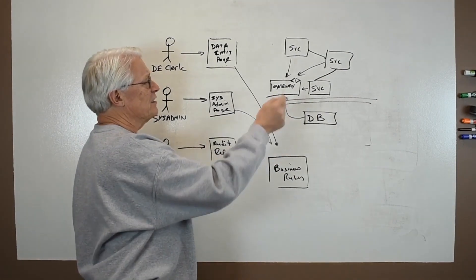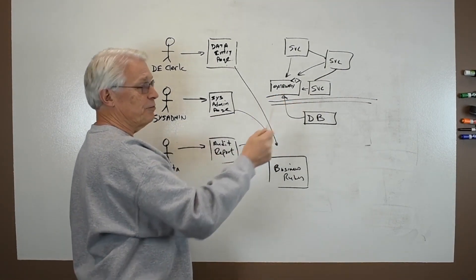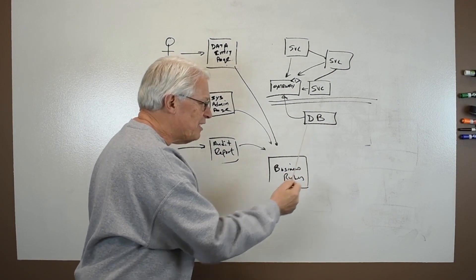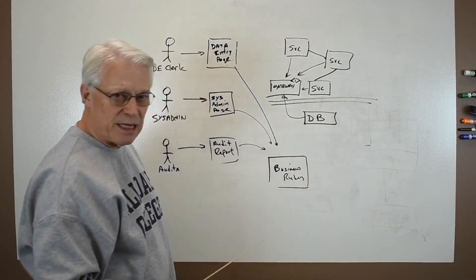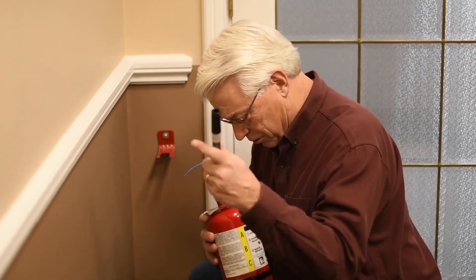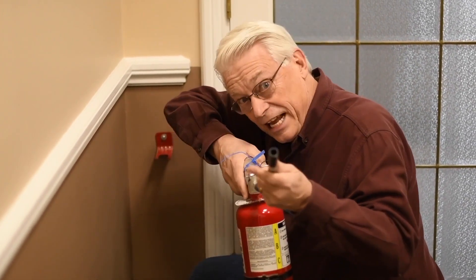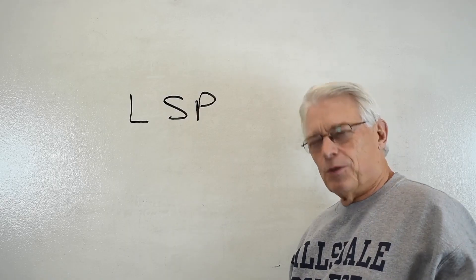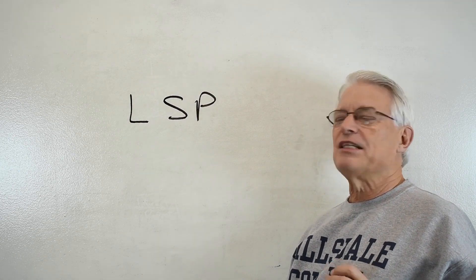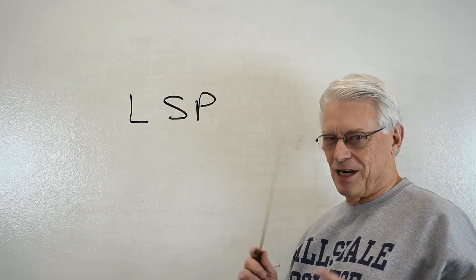A whole bunch of interfaces between services here should be completely unaffected by changes to the schema of the database. The classes and functions within a component must be cohesive enough to be released together. What do you suppose the architectural implications of the Liskov Substitution Principle are?